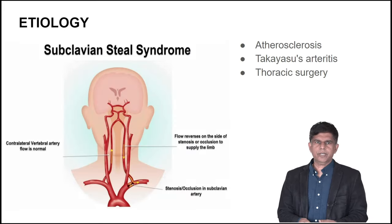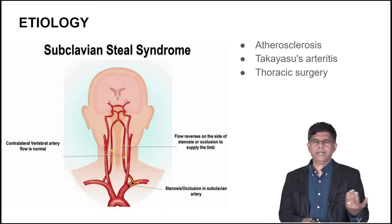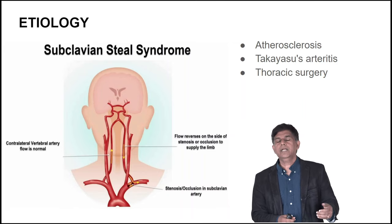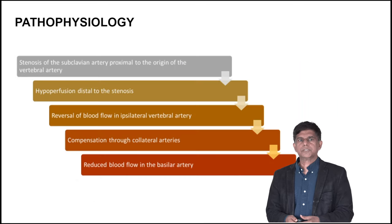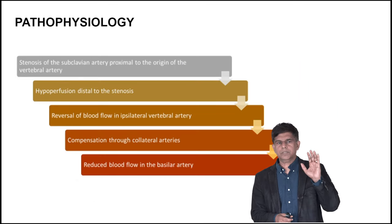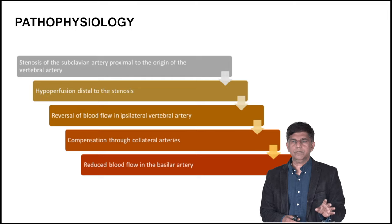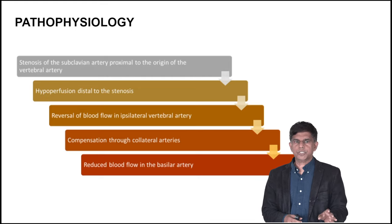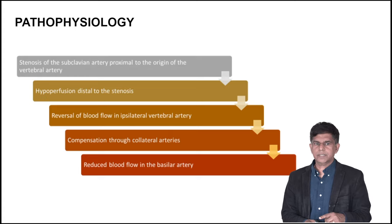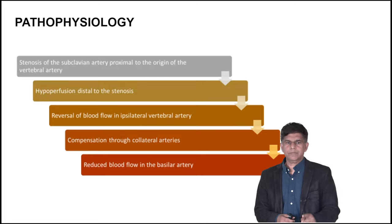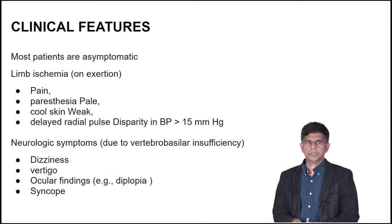Subclavian steal syndrome can be caused by atherosclerosis — that's the main culprit. It can also be caused by Takayasu's arteritis or thoracic surgery. The pathophysiology: there is stenosis of the subclavian artery proximal to the origin of the vertebral artery, hypoperfusion distal to the stenosis, reversal of blood flow to the ipsilateral vertebral artery, and compensation through collateral arteries — but there is still decreased blood flow to the basilar artery.